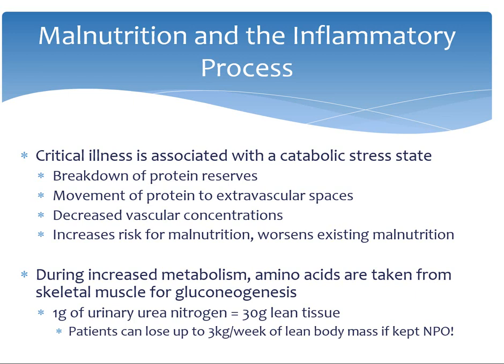I'm going to start by talking about malnutrition and the inflammatory process which we see a lot of in the medical ICU. Critical illness is associated with a catabolic stress state which leads to breakdown of protein reserves, movement of protein to the extravascular spaces, and leads to an increased risk of malnutrition or worsens existing malnutrition. During this period of increased metabolism, amino acids are taken from skeletal muscle for gluconeogenesis, and surprisingly one gram of excreted urinary urea nitrogen is equivalent to about 30 grams of lean tissue. Therefore patients can lose up to three kilograms per week of lean body mass if kept NPO. This is unfortunately a common occurrence, or a medical necessity to leave patients NPO, which can ultimately lead to malnutrition.